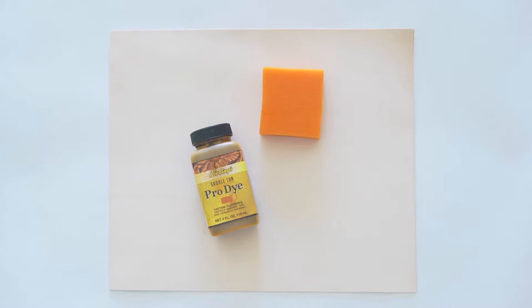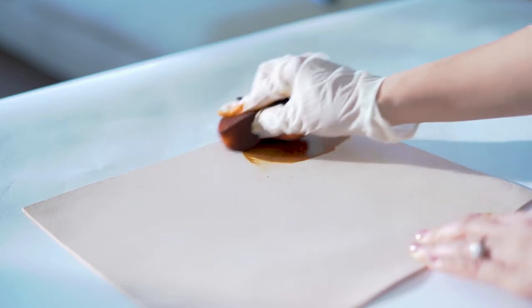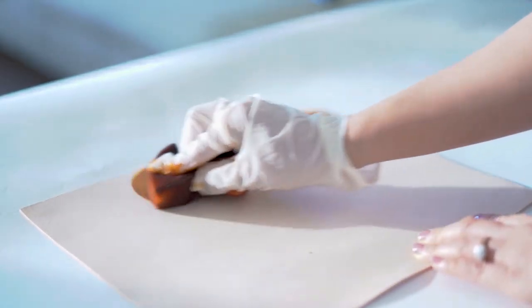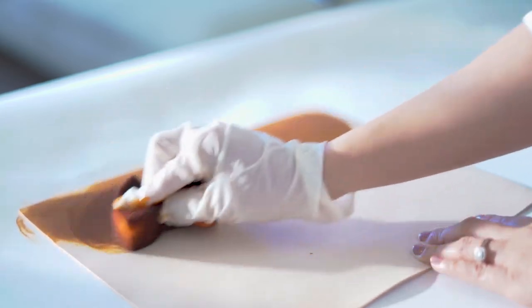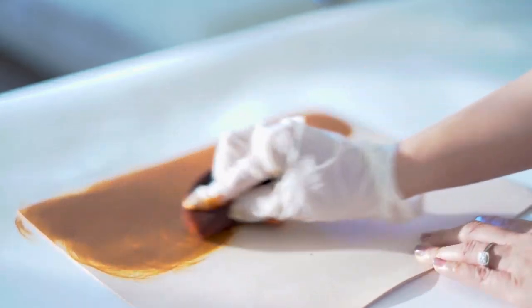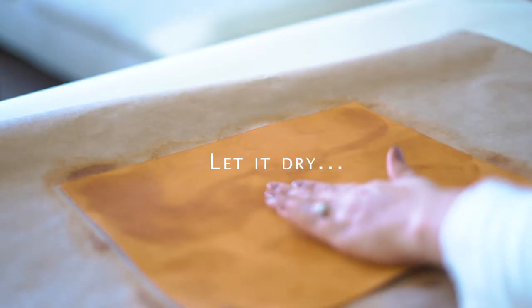Using a sponge, apply the base coat in a circular motion. Try not to inhale the fumes - do this in a well-ventilated area. It should be dry to touch, leaving no dye traces on your finger. This could take a few minutes depending on room temperature.